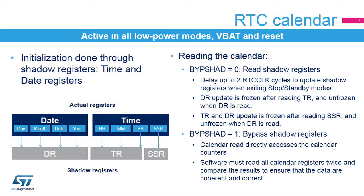The calendar, sub-second, time, and date registers content can be read in two different modes. When the bypass shadow registers control bit is cleared, the shadow registers are read. The advantage of this mode is that it guarantees that all three registers are consistent.